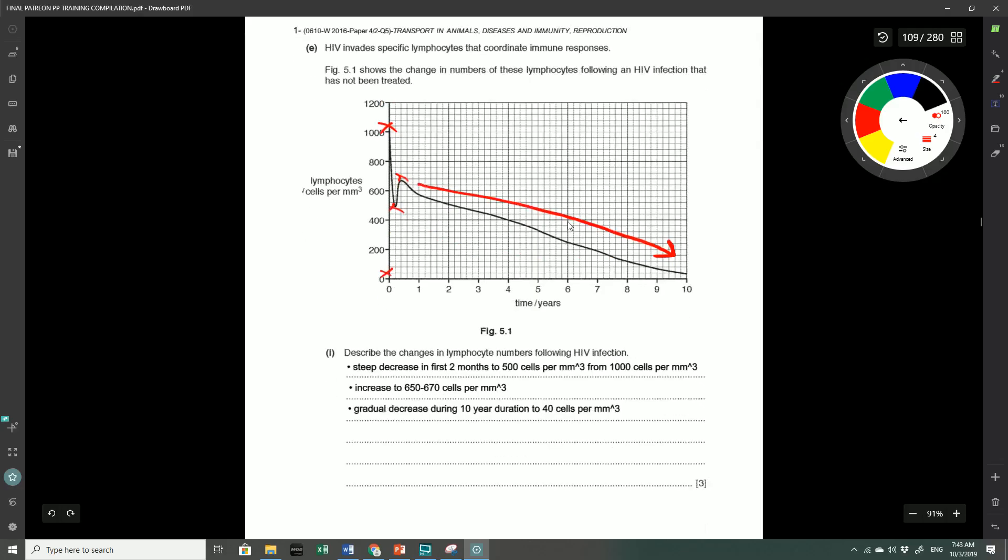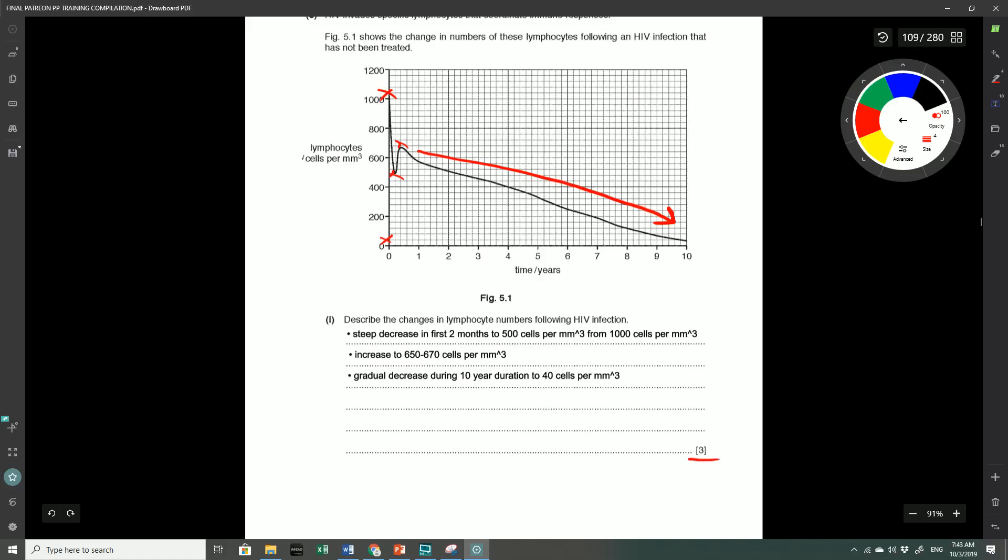That was all you needed to say for the three marks. As you can see, all you need to do is once again separate the graph that you're looking at into its separate components and just basically describe it with the quotations from the graph. That will give you very easy marks for your examinations. I hope that helped you guys and I will see you in the next video. Thank you.